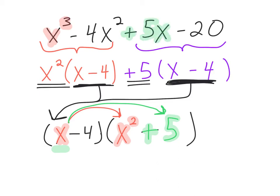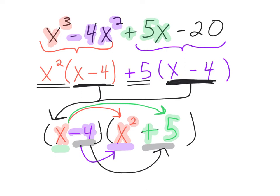We're looking good. Let's move on to negative four — negative four times x squared. Do we see that anywhere? Yes, right there. And just one last one: negative four times positive five gets me to negative 20, which we see right there at the end. And we are looking good.